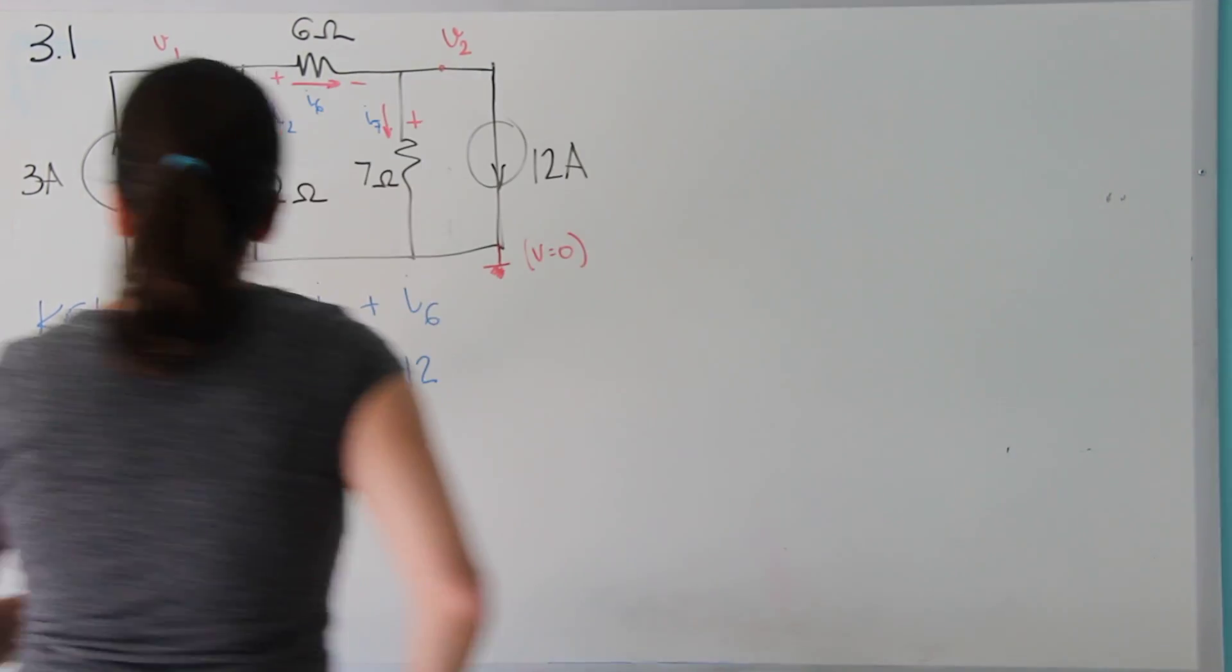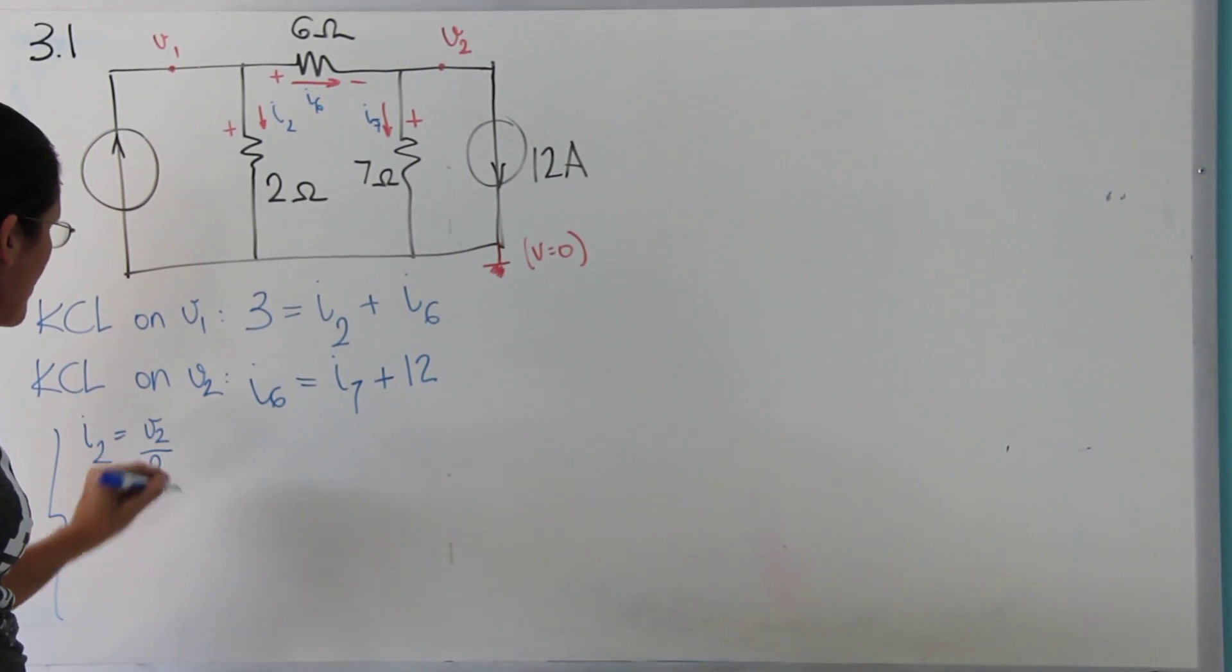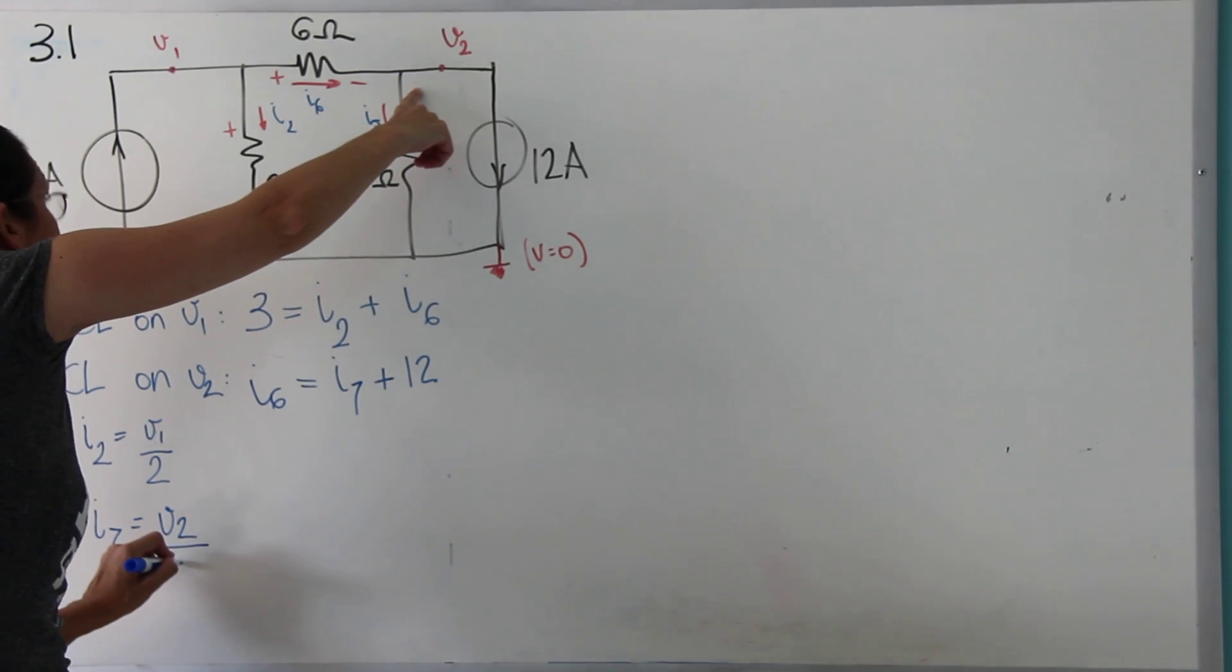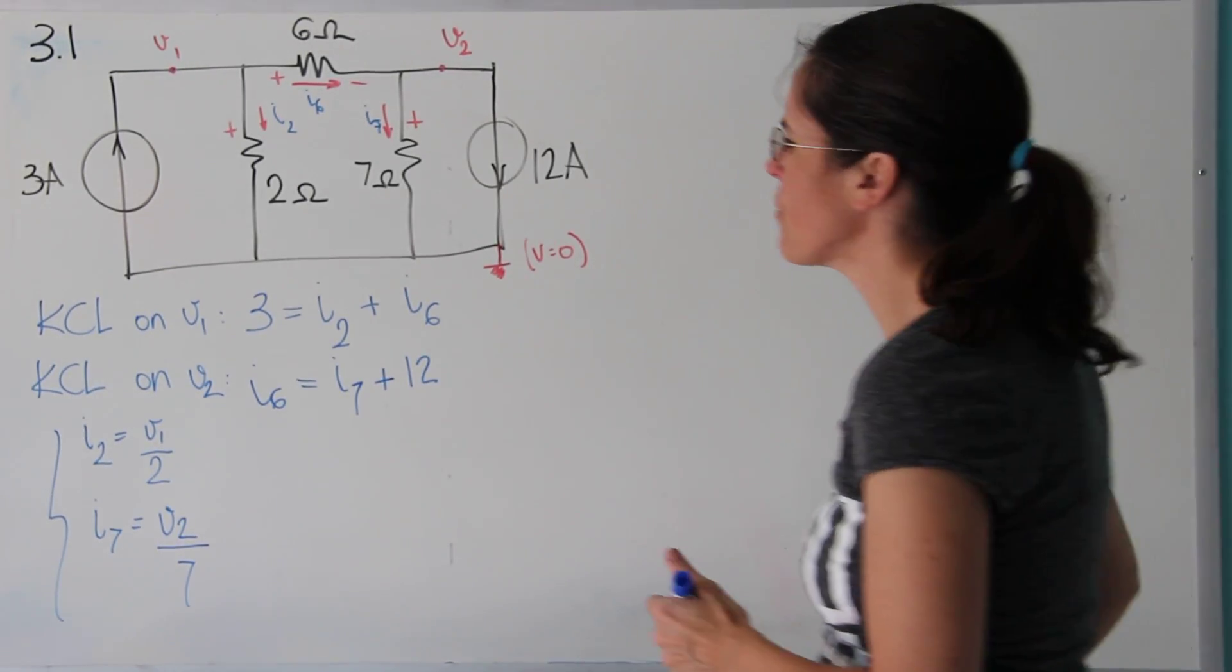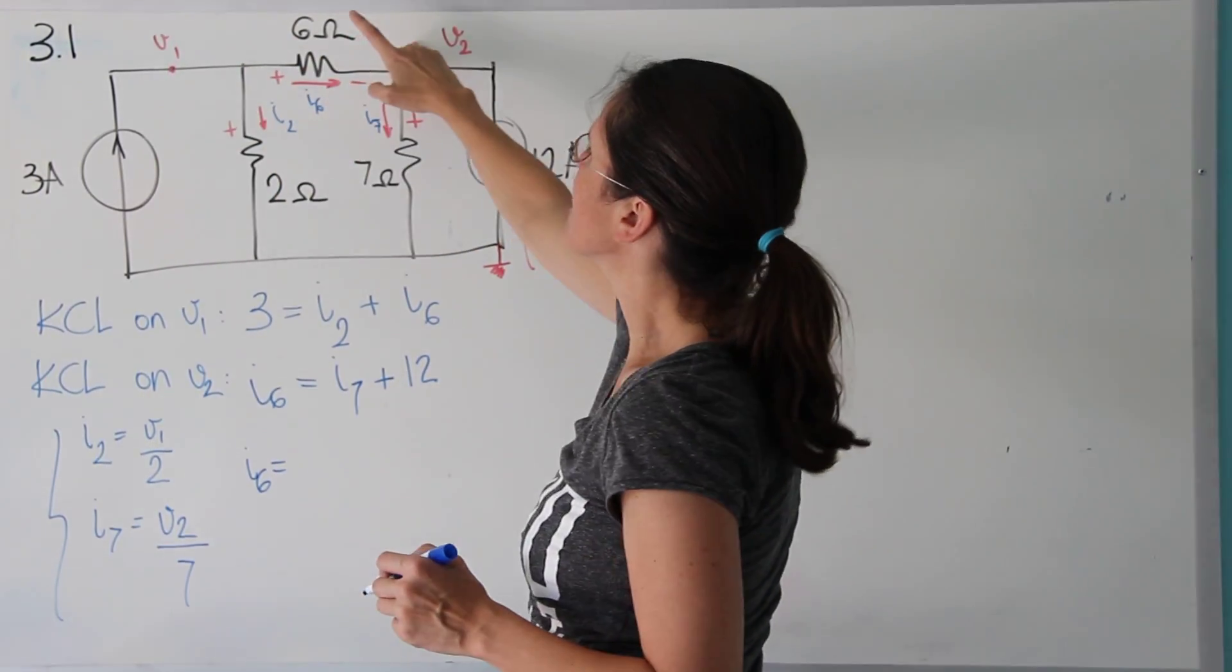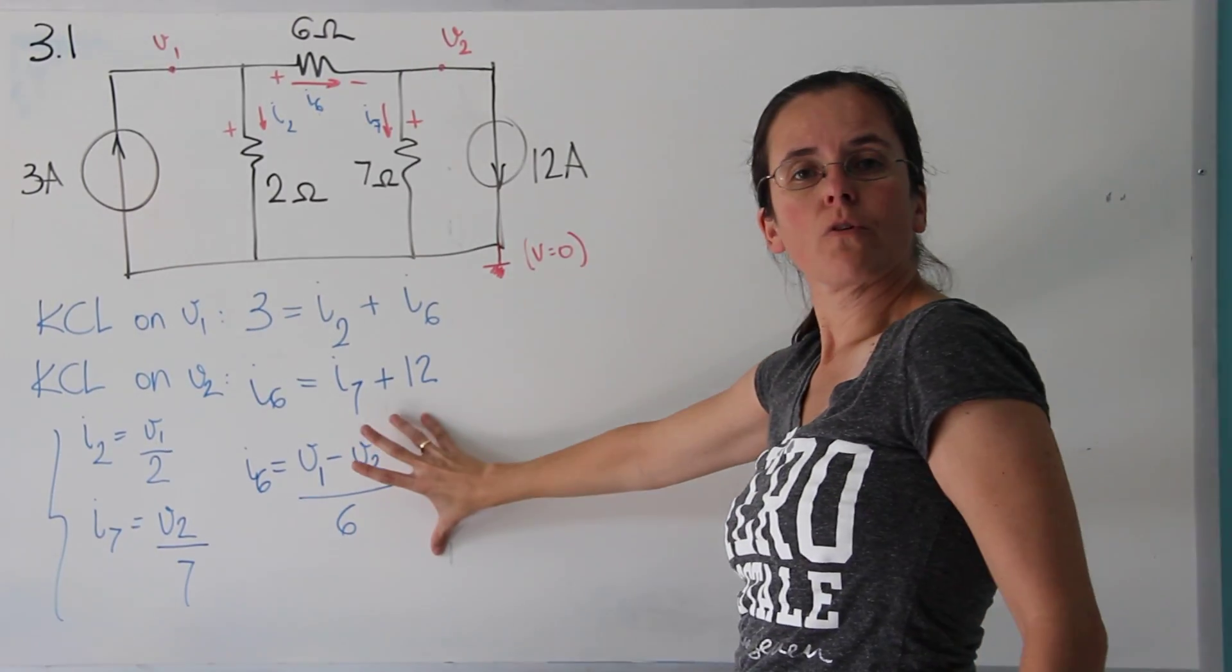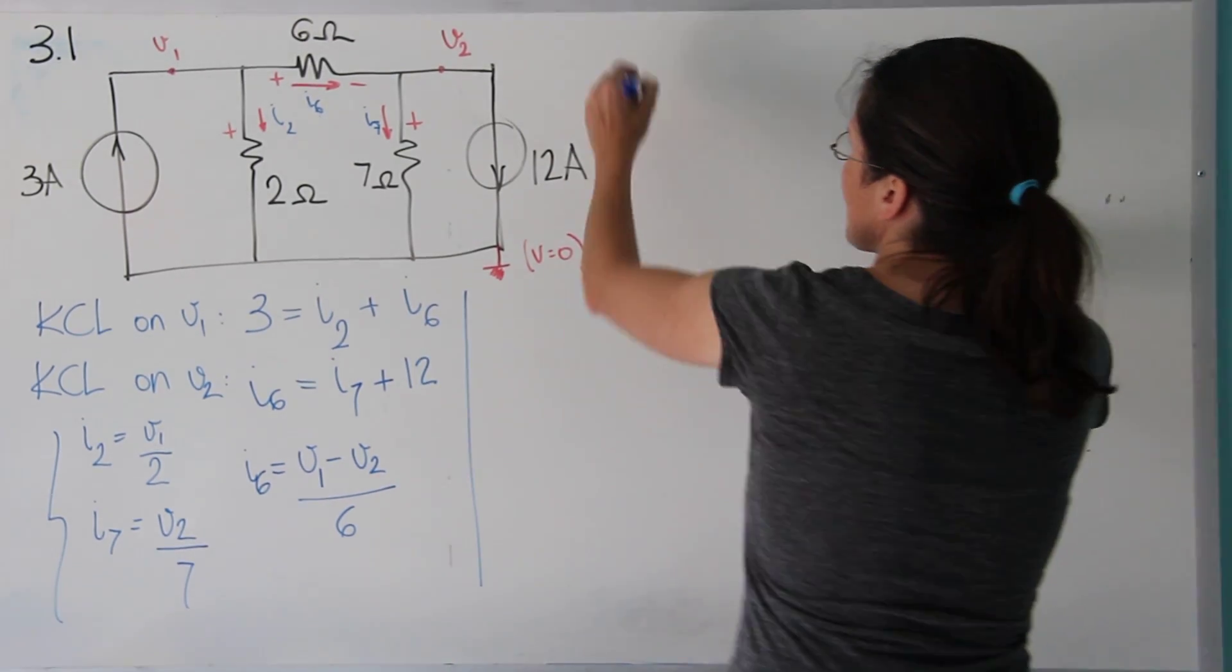Let's go for it. So first, I'm going to write here on the side, even though you don't really need to do this, but I2 equals V1 over 2. I7 is V2 over 7. But really, it's V2 minus 0 over 7. And the other one is V1 minus 0 over 2. Finally, I6 is the most interesting one, because it's this voltage minus this voltage divided by the resistance. So it's V1 minus V2 divided by 6. These are Ohm's law, only from Ohm's law. And now I'm going to substitute these guys into my first equations, my first two equations there.